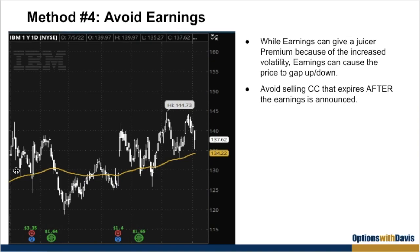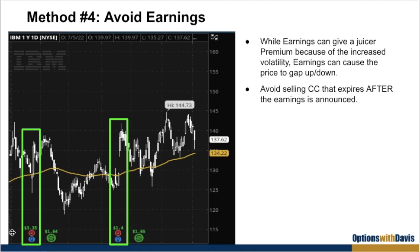For example, if they're going to announce earnings on, say, June 30th, you do not want to sell a covered call past that date. Rather, you want a covered call that expires before the earnings so you do not take the covered call into earnings. Looking at this stock IBM, you can see that whenever there's earnings there's quite a big price movement — in this case there's a big candle going up, and you can see there's a gap up. So if you don't want your stock called away, it's much better to just avoid selling covered calls when the stock is about to announce earnings.